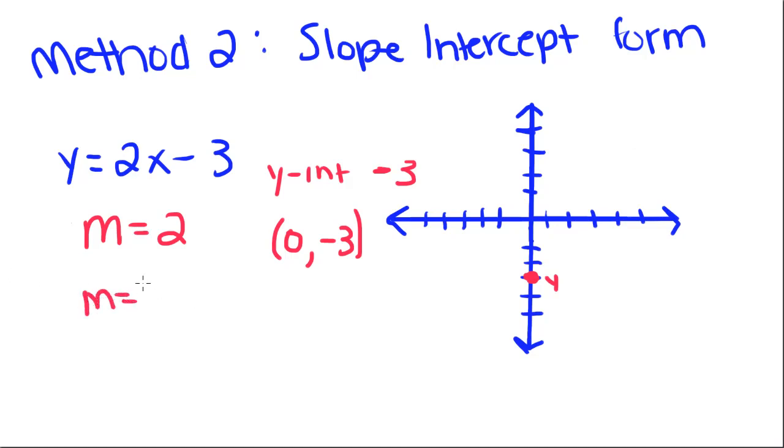Slope is just the ratio of rise over run. So if it has a slope of 2, that means its rise is 2 and its run is 1. So starting at 0, negative 3, we're going to go up 2 to the right 1, up 2 to the right 1, up 2 to the right 1, and then starting at our same y-intercept, we're going to go down 2 and left 1. And that gives you the same kind of slope, because if you take negative 2 and put it over negative 1, you still get 2.